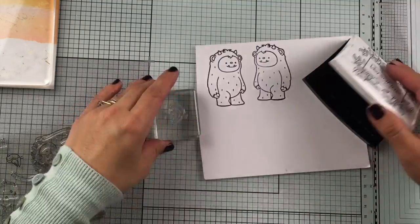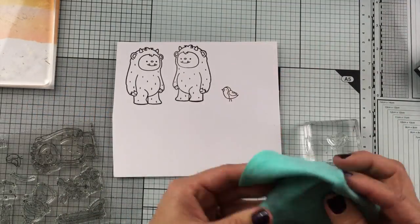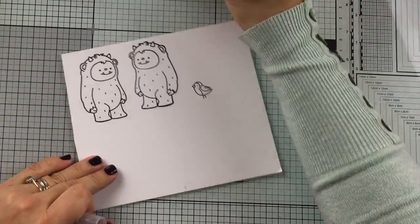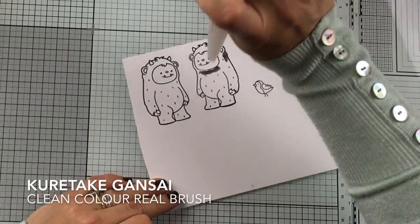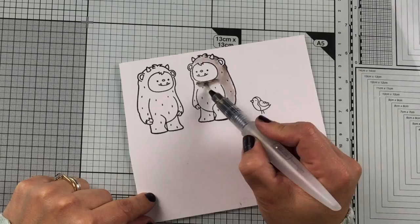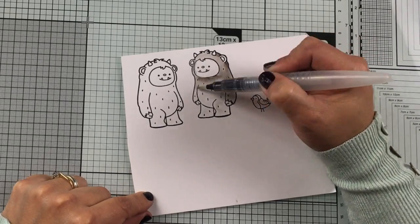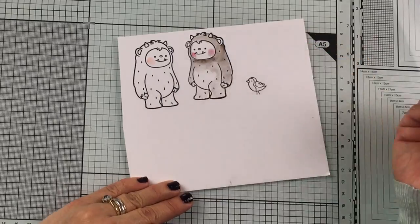After that I'm going to apply a very easy coloring technique using water-based markers. These are Zig or Kuretake Gansai Clean Color Real Brush, and all I do is I just apply the pen directly on the cardstock in some areas like that, and then with the water brush I just spread the ink.